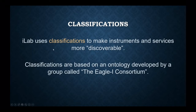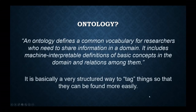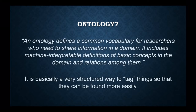iLab uses classifications to make instruments and services more discoverable. Classifications are based on an ontology developed by a group called the Eagle Eye Consortium. An ontology is a list of terms, often structured like an outline — very specific and structured, working well with databases because it's always the same terms. It's much like the way blogs or content is tagged on the internet so it can be found and sorted more easily.